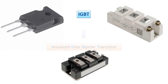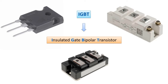IGBT is a power electronic circuit element formed by combining the best features of MOSFET and BJT transistors. These also have three pins. IGBT comes from the abbreviation Insulated Gate Bipolar Transistor. It is used in many areas for switching purposes. IGBTs, which can act as diodes, TRIACs, or transistors when necessary, are used extensively — especially in UPSs that require high switching speed.